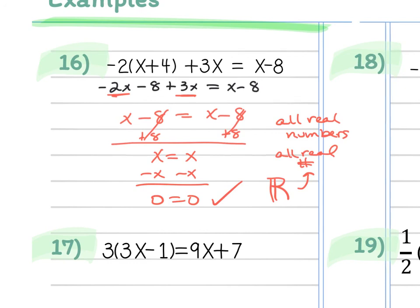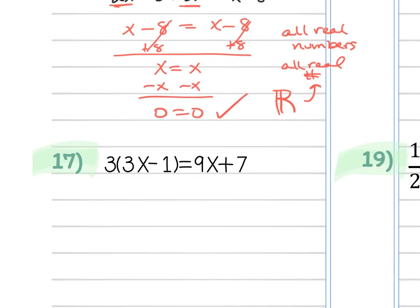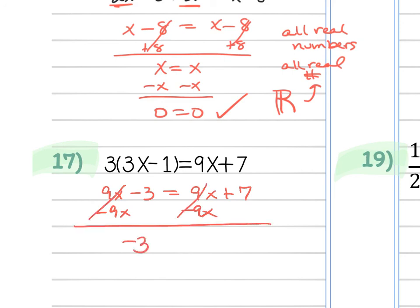Let's try number 17. Distributing: 3 times 3x is 9x, and 3 times -1 is -3. When I try to group the variables, the variables cancel and I'm left with -3 = 7. This will never happen — it's a false statement. When this occurs, the answer is the empty set symbol (Ø), which represents 'no solution.' You can write either the symbol or the words 'no solution.' When the variables cancel and leave a false statement, the answer is no solution.